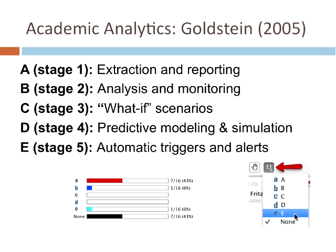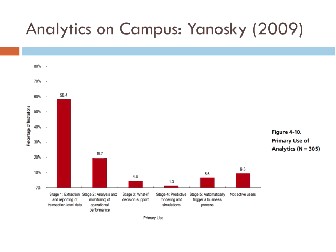Not surprisingly, a lot of us are still in these early stages of really trying to grapple with what I would call the infrastructure of analytics — both technical hardware and software, but also expertise. Just trying to get the right people together is a challenge. Four years after this report was created, Yanofsky, again for ECAR, did what I would call a repeat of the five stages of analytics to see where people were at. A lot of institutions were still at these early stages.